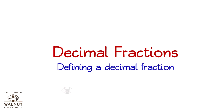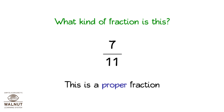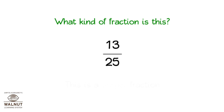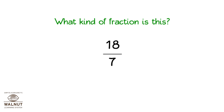Defining a decimal fraction. You have already learned what a fraction is. What kind of fraction is 7 upon 11? The numerator is less than the denominator — this is a proper fraction. What kind of fraction is 13 upon 25? The numerator is less than the denominator — this is a proper fraction. What kind of fraction is 18 upon 7? The numerator is more than the denominator — this is an improper fraction.